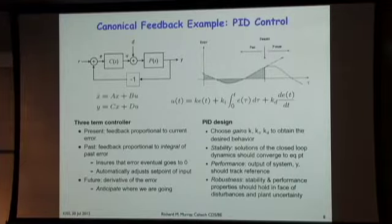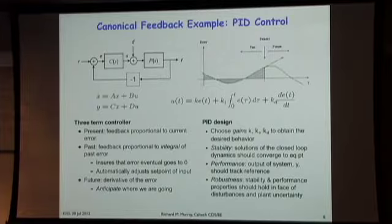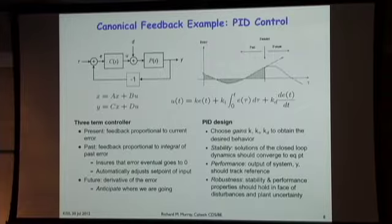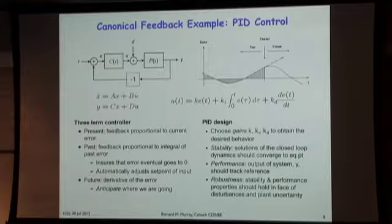PID, originally called a three-term controller, has systematic techniques for designing all three pieces and analyzing stability, performance—tracking reference, avoiding overshoot—and robustness. One challenge of feedback control I glossed over: stability. When you connect output back to input, you run the risk that the system might go unstable. If I had the gain knob for a microphone and turned it up, you'd hear it hum—that's an instability: amplifying your own voice too many times until it goes unstable.